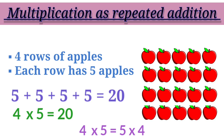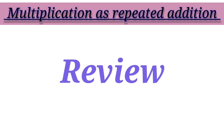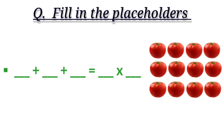Children, I believe everyone is clear about multiplication as repeated addition. Now let's do a quick review. Fill in the placeholders. How many rows do you see in the picture? Yes, we have three rows. And how many tomatoes are there in each row? That's right, we have four tomatoes. Therefore, four plus four plus four equals to three times four, which means three multiplied by four.